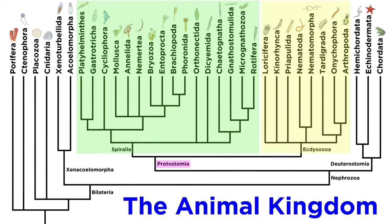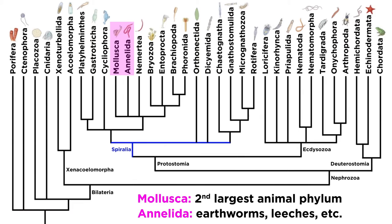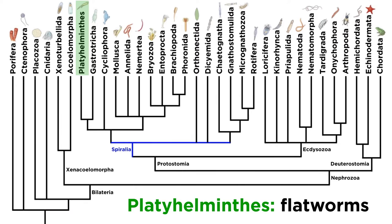Unlike Ecdysozoa, Spiralia is a difficult clade to define based upon morphology alone. Perhaps the two most widely recognized spiralian phyla are Mollusca, which is the second largest animal phylum, and Annelida, which includes the earthworms and leeches. Other less familiar phyla are the flatworms of Platyhelminthes, the ribbonworms of Nemertea, and the wheel animals of Rotifera.